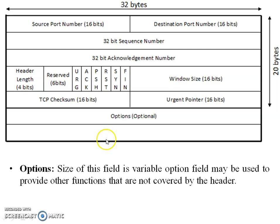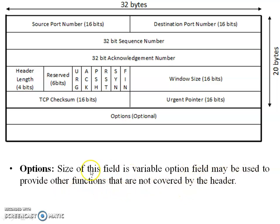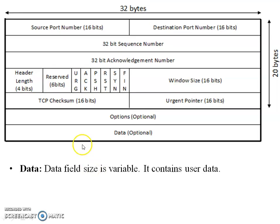The options field is used when any function is not available in the standard header fields — options are mostly used to add such functions. The size of this field is variable. The data field also has a variable size and contains the user data — whatever the user wants to send is placed here.